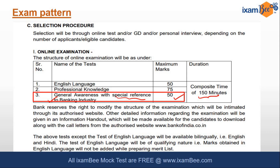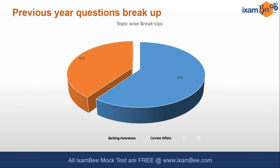Now let's see what was the last year's pattern. Looking at the previous year question breakup, 40 percent of the questions asked in the general awareness section were from current affairs and 60 percent was from banking awareness, as they have especially mentioned in the notification — special focus would be on banking awareness.